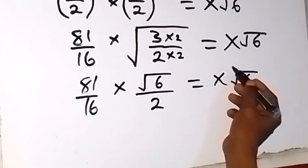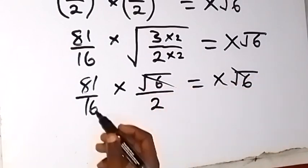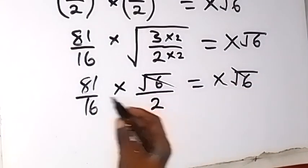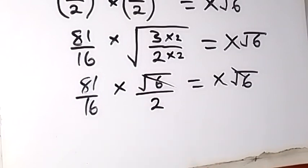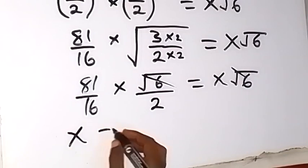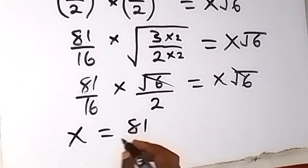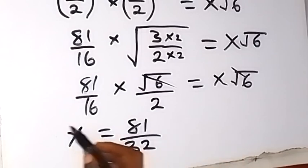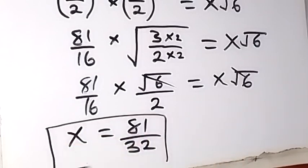And from here, root 6 can cancel root 6. What we have left is 81 over 16 times 2 down. So this will give us x equals 81 divided by 32. And this is the value of x.